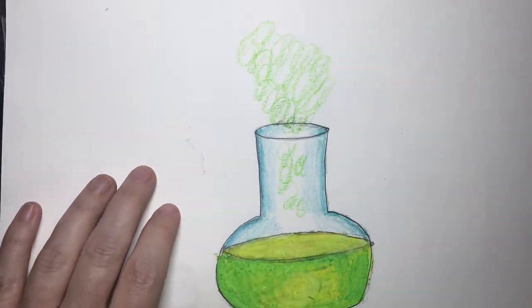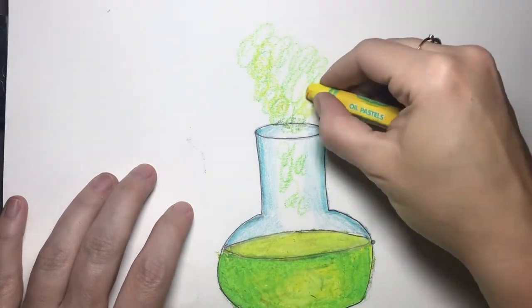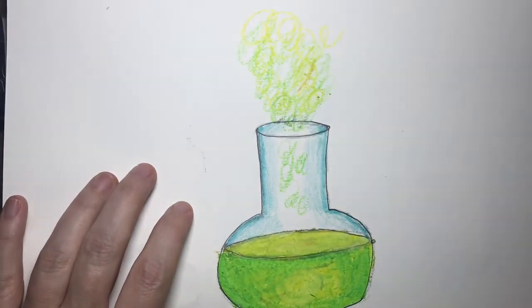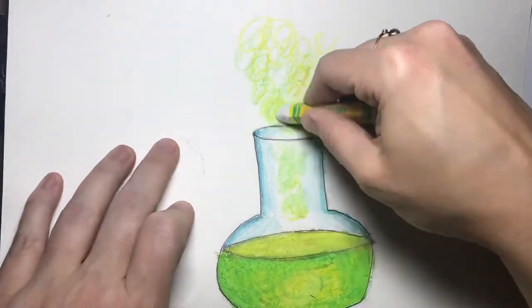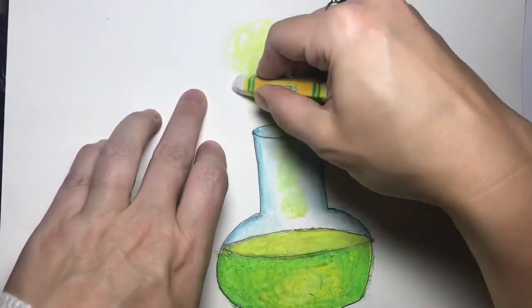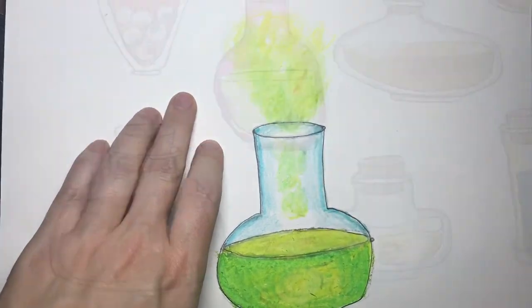Now I'm adding a nice fume-y cloud coming out from my potion. I'm also using more than one color for the cloud and a white oil pastel can really help you blend your colors. What a good secret ingredient.